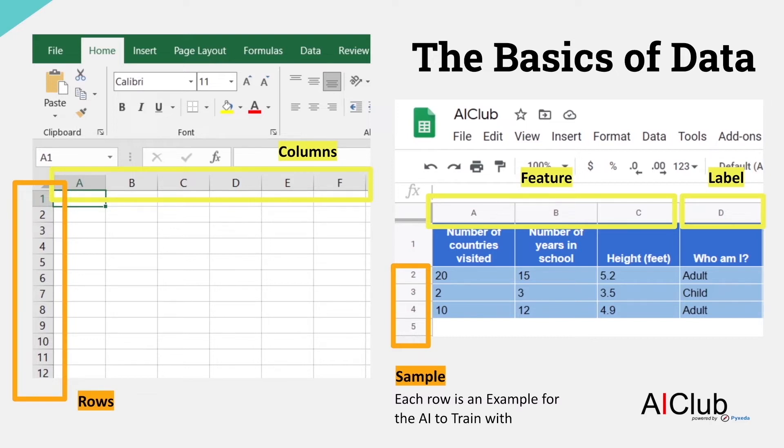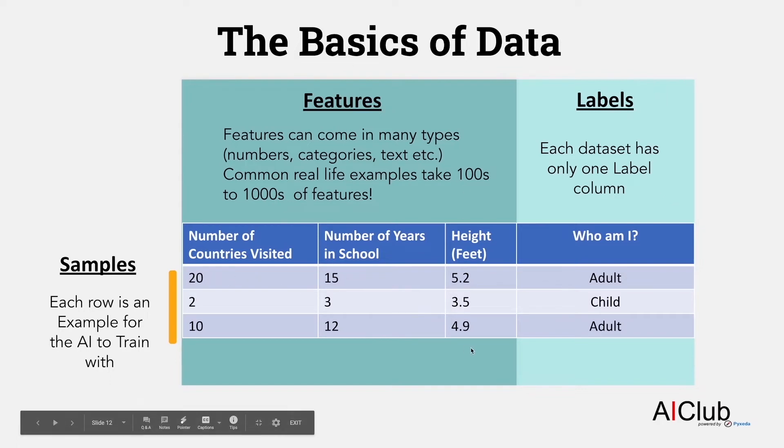This means that you will give your AI information about how many years someone went to school, how many countries someone visited, and their height. The AI will take this information, and it is supposed to predict if this person is an adult or a child. Another word that you come across is sample. Every row here is called a sample. On this slide, for example, there are three samples, which are providing the AI to learn from.